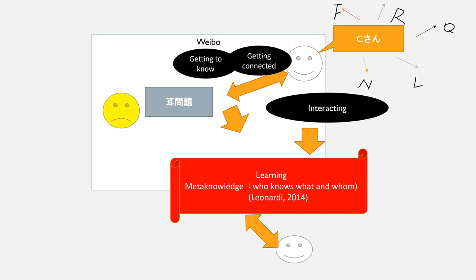The yellow one in the picture is me, and I have the ear problem. This non-human factor — the internet — connected me with other people. First I got to know C (shown in white), and through C I also got connected with other people: R, Q, N, L. Through this interaction I learned who knows what and who knows whom, which reflects the role of meta knowledge in the learning process.